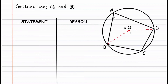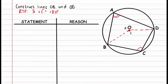Now let's go on to proving this theorem. We are required to prove — RTP — that angle A plus angle C equals 180 degrees, so we focus on those angles. First, angle O1 at the center is twice the size of angle A because they are both supported by the same arc BD. This uses the theorem from the previous video.